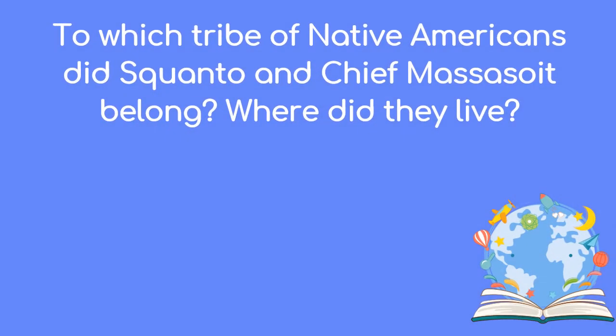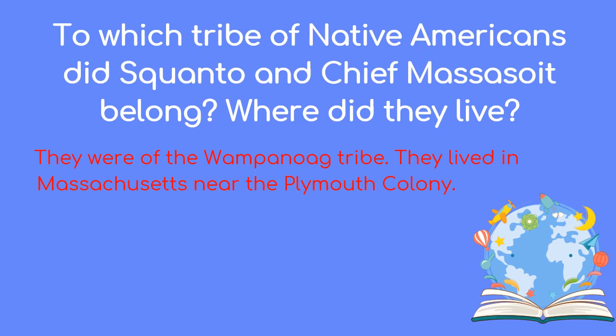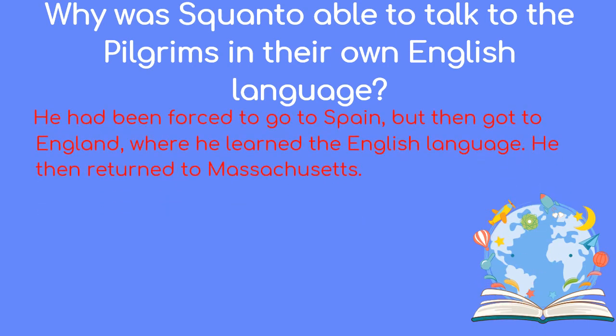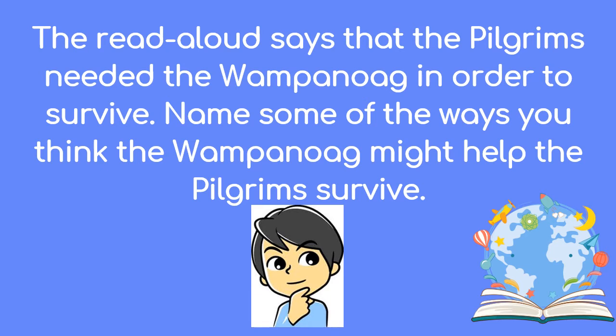To which tribe of Native Americans did Squanto and Chief Massasoit belong, and where did they live? They were of the Wampanoag tribe. They lived in Massachusetts near the Plymouth Colony. Why was Squanto able to talk to the pilgrims in their own English language? He had been forced to go to Spain, but then got to England where he learned the English language, and then returned to Massachusetts. The read aloud says that the pilgrims needed the Wampanoag in order to survive. Name some of the ways you think the Wampanoag might help the pilgrims survive. Share your thoughts with someone in your family.